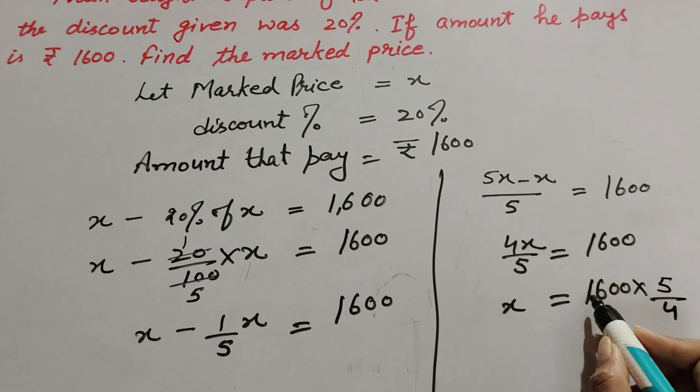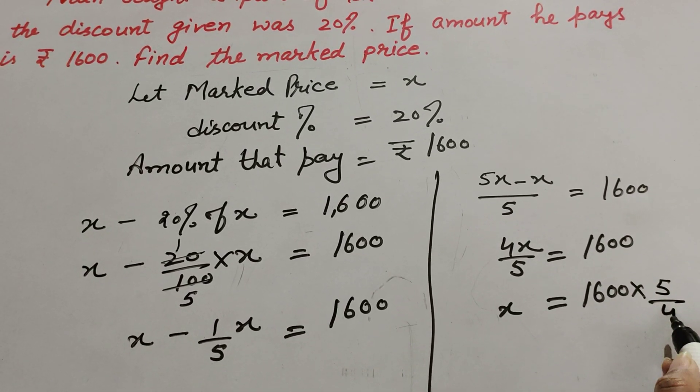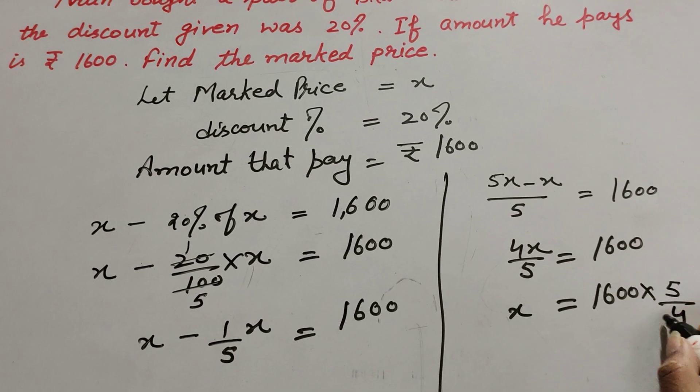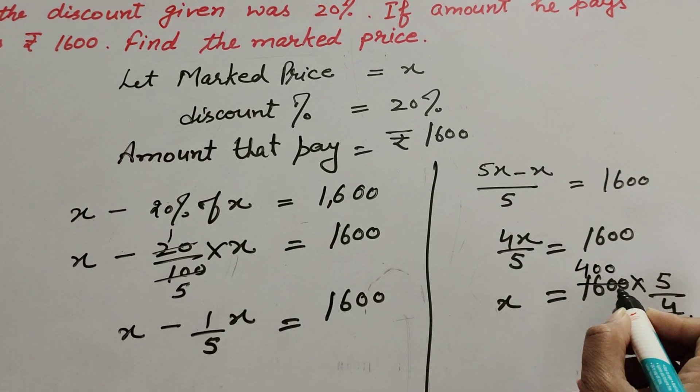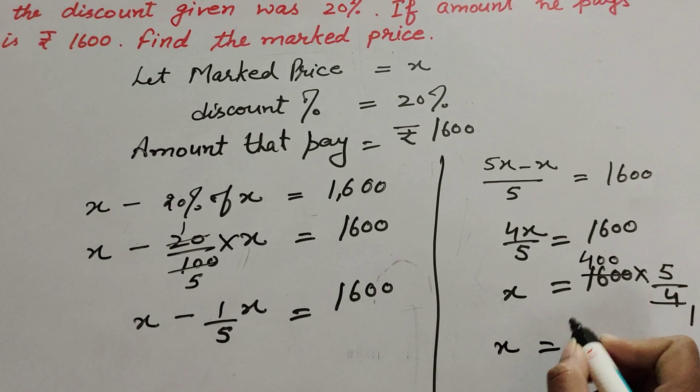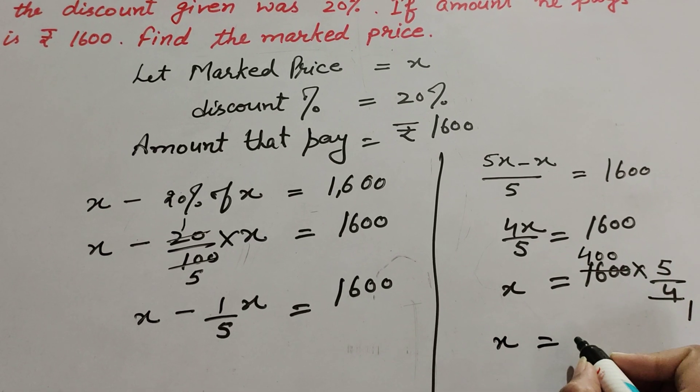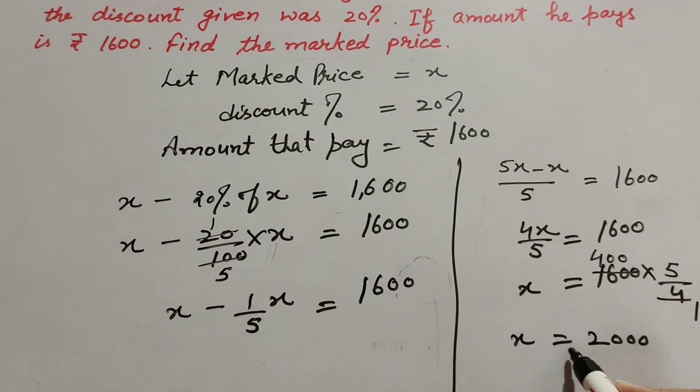Now 1600 and 4 are both divisible by 4, so we cancel them. Four ones are 4, 400 fours are 1600. So x equals 400 multiplied by 5, which equals 2000.